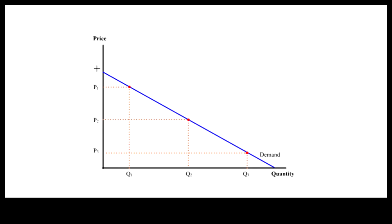The vertical intercept represents the highest possible price any buyer would pay. And the horizontal intercept represents the maximum amount that would be demanded even if it's free.